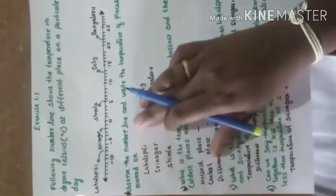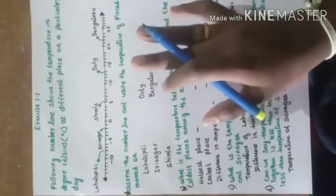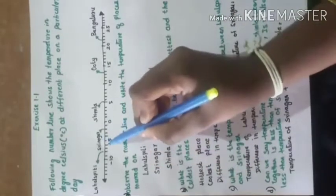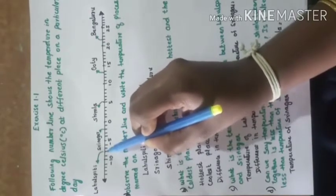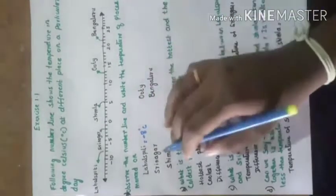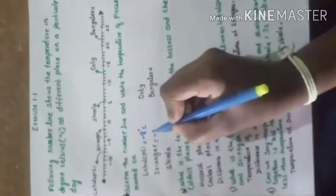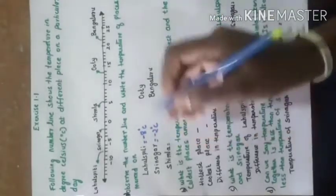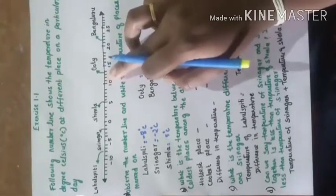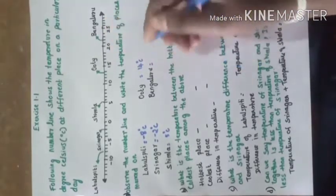Sub-question A: Observe the number line and write the temperature of places marked on it. Lahul Spithi is minus 8 degrees Celsius. Srinagar: counting 0, minus 1, minus 2 — that is minus 2 degrees Celsius. Shimla is 5 degrees Celsius. Ooty: counting 11, 12, 13, 14 — that is 14 degrees Celsius. Bangalore: counting 20, 21, 22 — that is 22 degrees Celsius.